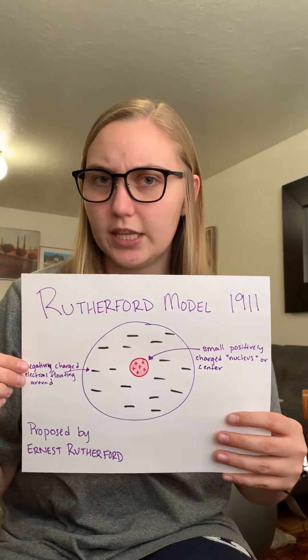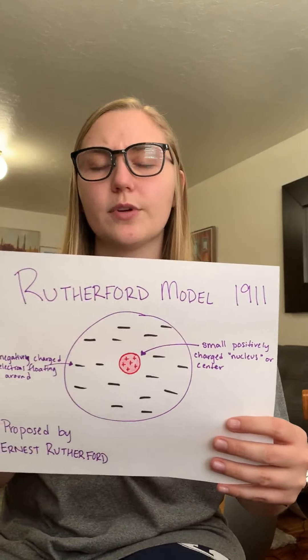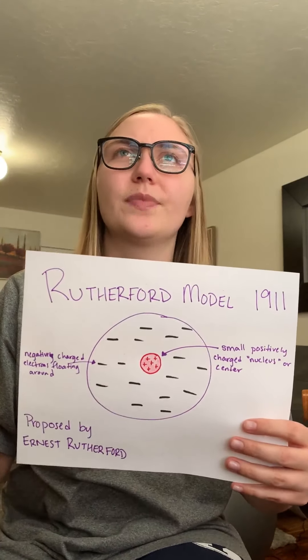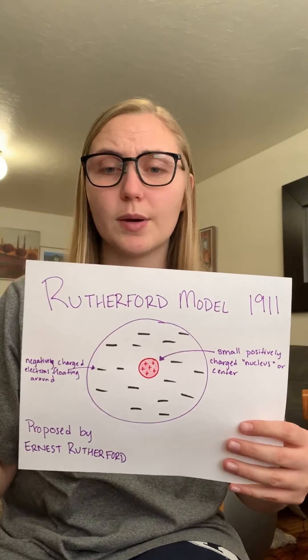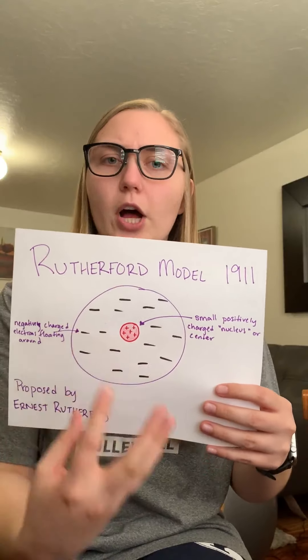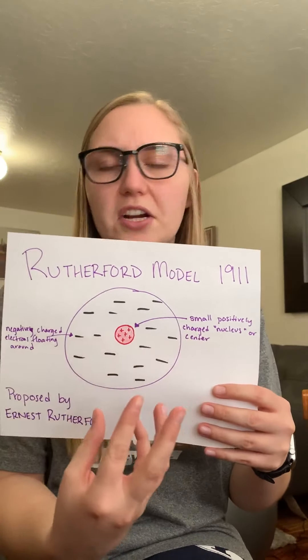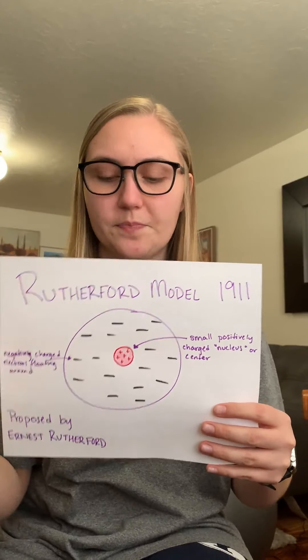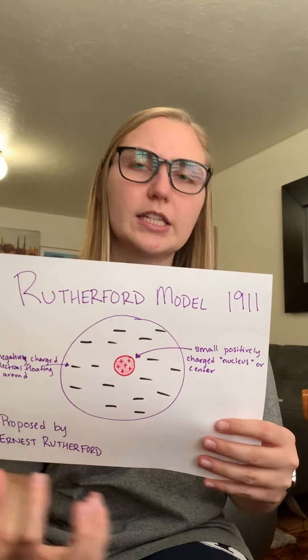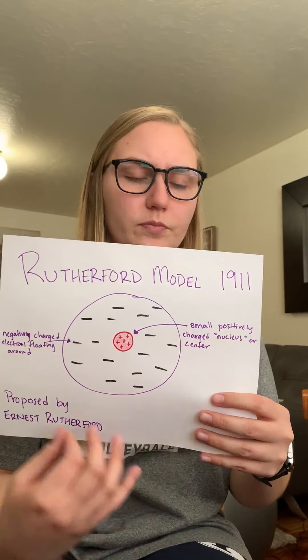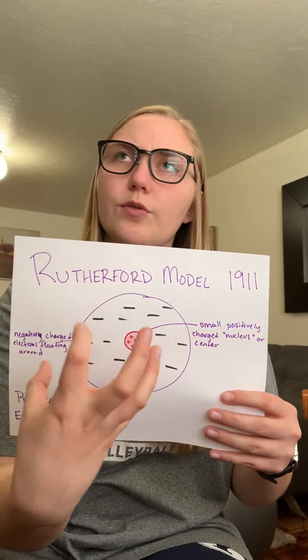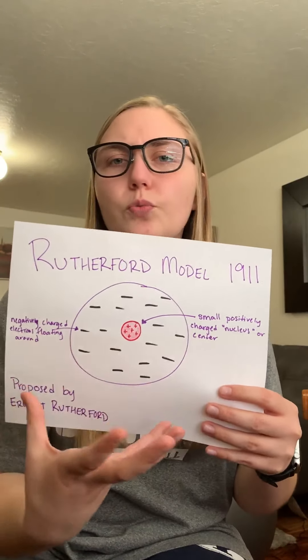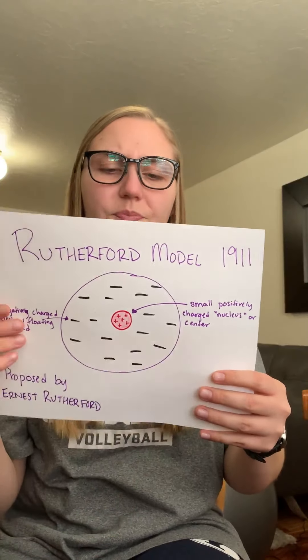In 1911, Rutherford came out and using the information that JJ Thompson had put into place, Ernest Rutherford said he thought it was a little bit off. What he came up with was the idea that there is a positively charged central area — which we now call the nucleus — and he still thought there was a cloud of negative electrons around it, but he thought the positive charge wasn't just a soup; it was centralized. He proposed this in 1911.